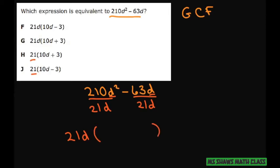And then what goes inside is what the division is here. So 210 divided by 21 is 10. And d squared divided by d is d. Put your minus.